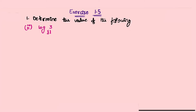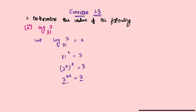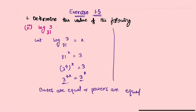Second problem: log base 81 of 3. Let log base 81 of 3 equal to x. Exponential form: 81^x = 3. Now 81 = 3×3×3×3 = 3⁴, so (3⁴)^x = 3, giving 3^(4x) = 3. Bases are equal so powers are equal: 4x = 1, x = 1/4. Therefore log base 81 of 3 equals 1/4.